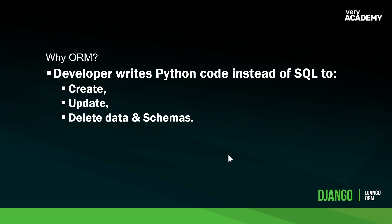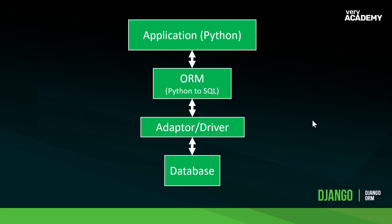It also makes it easy to migrate to different databases. Looking at the next step of how this actually works, I want to draw your attention to something called a database driver or database adapter. We have Python objects that get translated into database objects, but we need some sort of transport facility to get data from the ORM to the database reliably — a bridge that allows both entities to communicate. This adapter or driver is a set of library functions that allows the client program to pass queries to the database backend server and receive results.